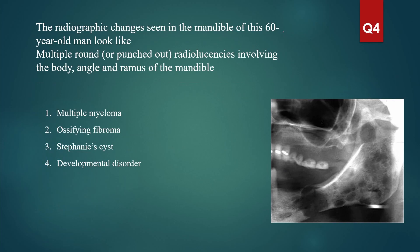The radiographic changes in the mandible of a 60-year-old man show multiple round or punched-out radiolucencies involving the body, angle, and ramus of the mandible. Remember: whenever there are multiple lesions, there's a good chance it is malignant. Rounded or punched-out radiolucency is always going to be multiple myeloma, usually involving the body, angle, and ramus. So punched-out radiolucency equals multiple myeloma.